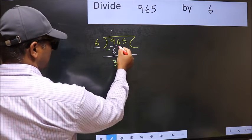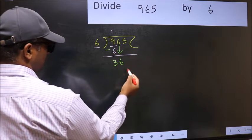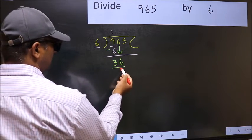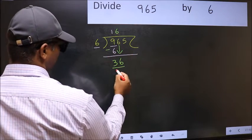After this, bring down the next number. So 6 down. Now 36. When do we get 36 in the 6 times table? 6 times 6 is 36.